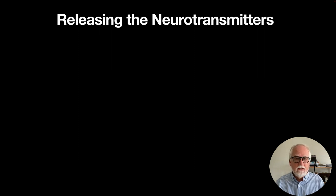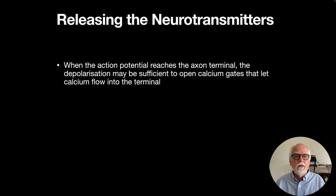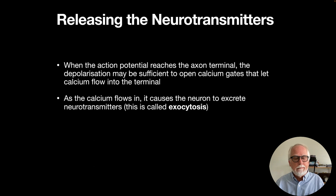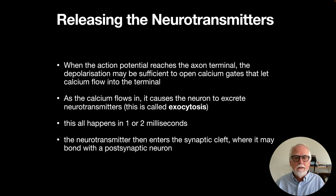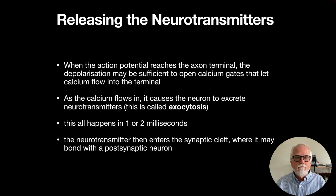When the action potential reaches the axon terminal in the presynaptic neuron, a depolarization occurs sufficient to open calcium gates, letting calcium flow in. As calcium flows in, it causes the neuron to excrete the neurotransmitters — a process called exocytosis. This all happens in one or two milliseconds. The neurotransmitter then enters the synaptic cleft, where it can bond with the postsynaptic neuron.